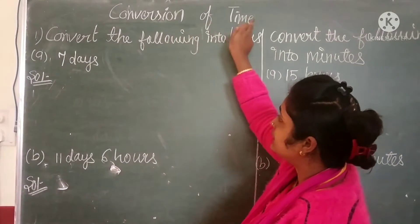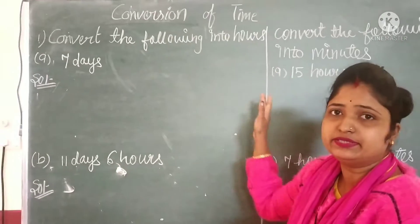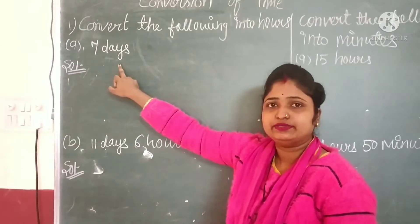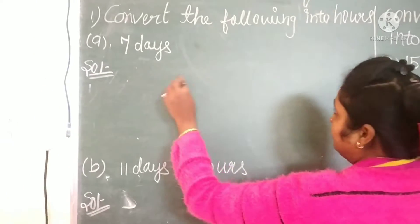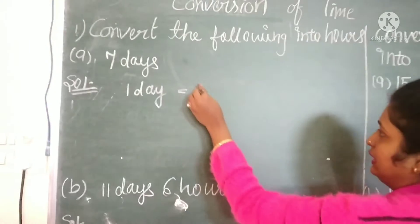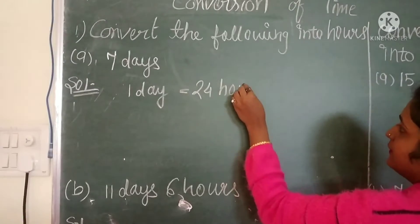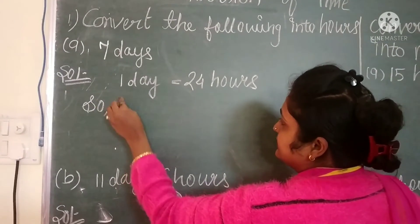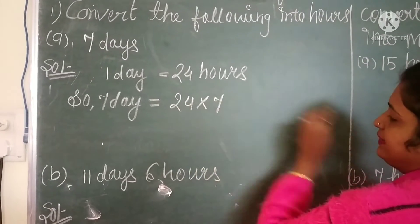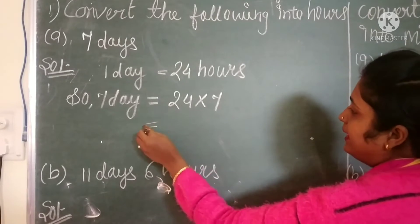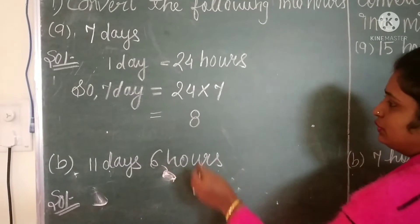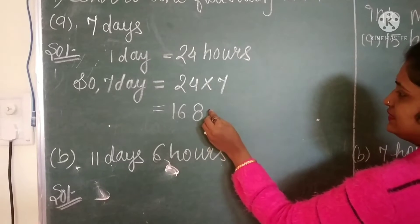Next topic is converting time. We have to convert the following into hours. First question: 7 days. We know that 1 day equals to 24 hours. So, 7 days equals to 24 multiplied by 7. We multiply 24 by 7 and get 168. So, in 7 days there are 168 hours.